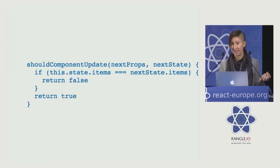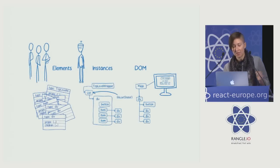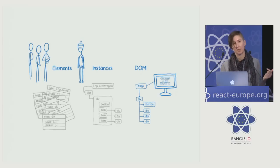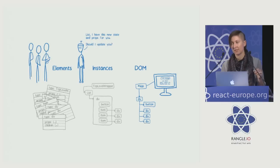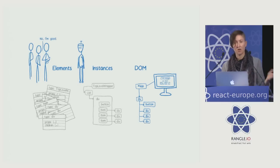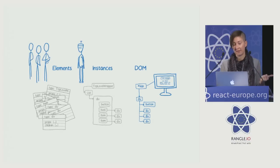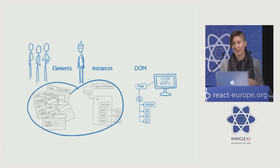How can you avoid wasting time like this? You've probably heard of one way: shouldComponentUpdate. When the user clicks and setState is called, before building up the render tree below the list, React asks the component a question: if I give you these next props and this next state, do you need to update? If the component says no, React doesn't call render and doesn't do anything else to that component or its children. This is great because we can skip computing the list and everything under it, saving a good amount of work.